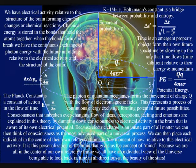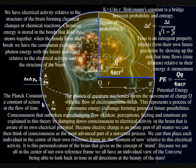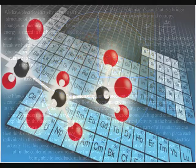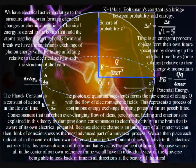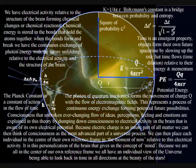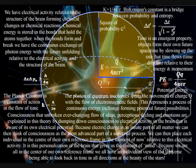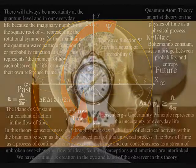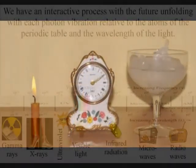We have electrical activity relative to the structure of the brain forming chemical changes or chemical reactions. Chemical energy is stored in the bonds that hold the atoms together. As the bonds form and break, we have the continuous exchange of photon energy, with the future unfolding relative to the electrical activity and the structure of the brain. This is a totally universal process — the future is always unfolding with electrical activity relative to the structure of the atoms and the wavelength of the light.